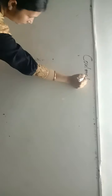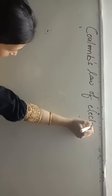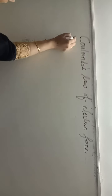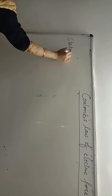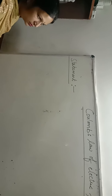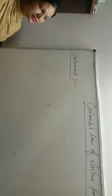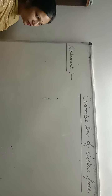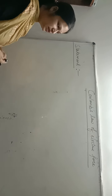Coulomb's Law states that the force of attraction or repulsion between two stationary point charges is directly proportional to the product of the magnitude of the charges, and inversely proportional to the square of the distance between them.